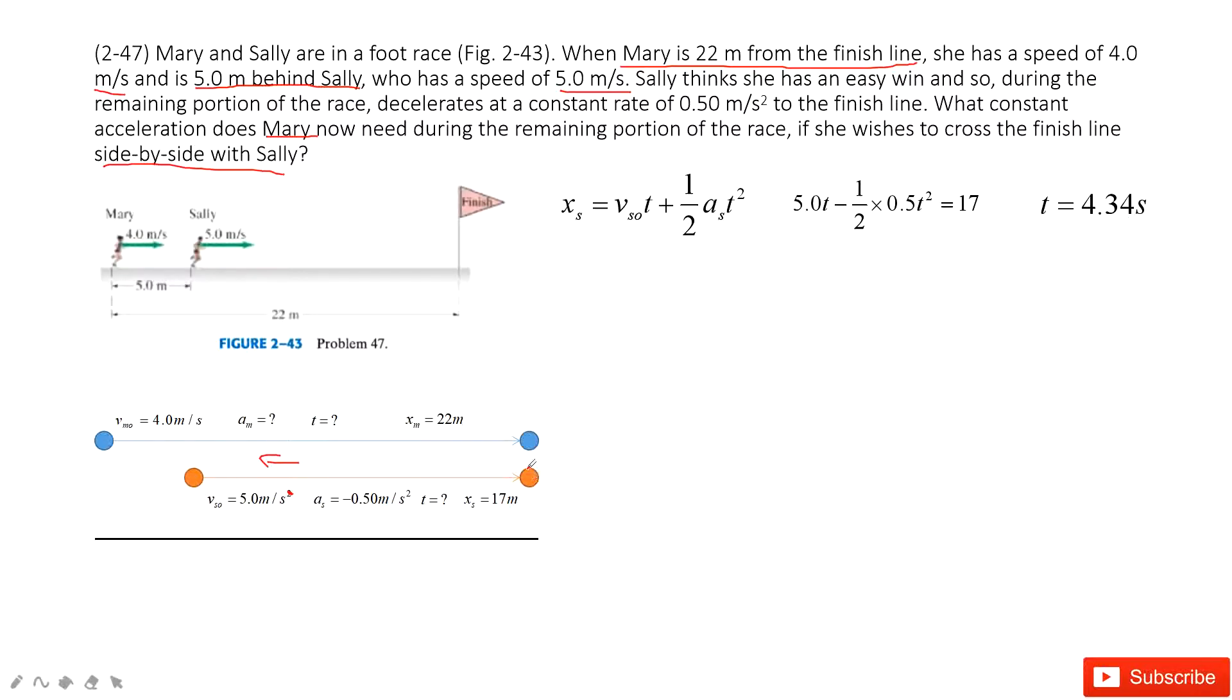Then we write the displacement function for Mary. For Mary, we know the total displacement is 22 meters and the initial velocity is 4 meters per second. We know the time taken, so we input the time inside. The only unknown is acceleration for Mary. We can solve that the acceleration for Mary is 0.5 meters per second squared.